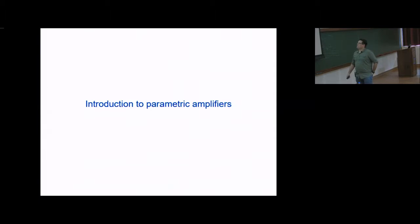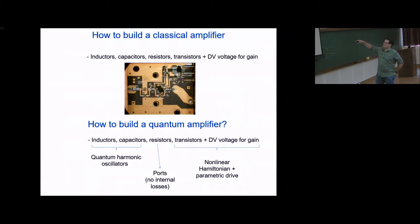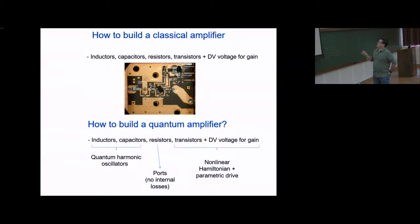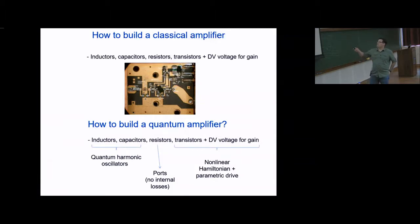How do you build a classical microwave amplifier? This design is from Sandy Weinreb's website — he is one of the best makers of classical low-temperature cryogenic microwave amplifiers. Engineers take inductors, capacitors, and resistors — you can see them as little elements. Crucially, they take transistors powered by DC voltages to provide the nonlinearity at the center of the amplifier. The transistors' nonlinear IV curves allow a large voltage swing on the output for a small voltage on the input; all the other components manage the microwave properties.